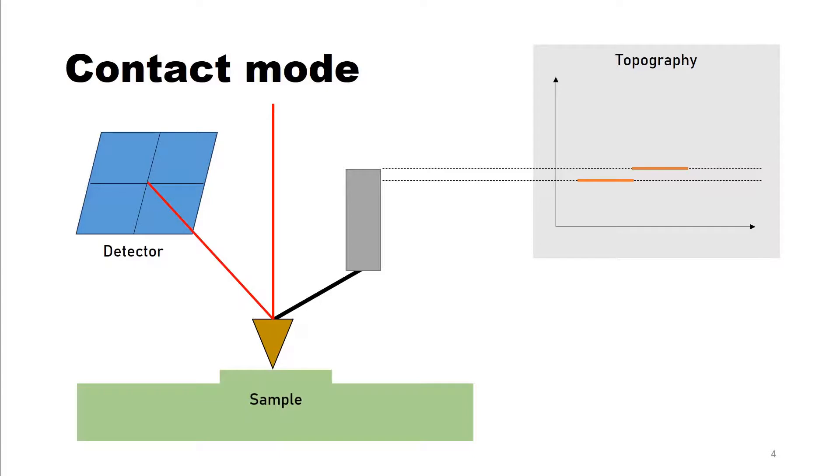Higher friction causes the cantilever to move left or right instead of up and down. And this movement can be measured too and then be correlated to the friction of the sample.